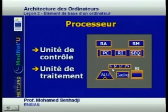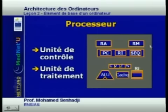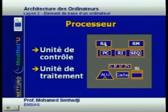The other important part of a computer is the processor. It is composed of two parts: the control and the treatment. The control part is composed of the address register, which allows sending the address to communicate with both the central memory and peripheral units. It is also composed of the data register, which allows connecting to the data bus to recover or send data.